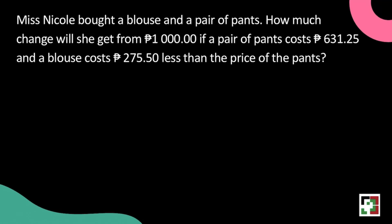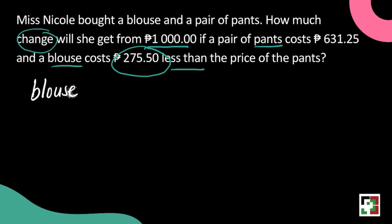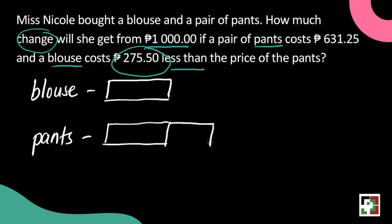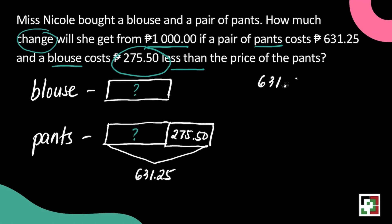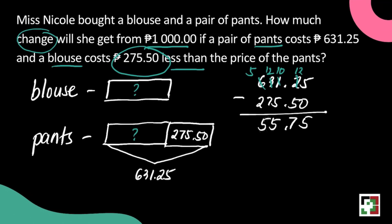We have the next problem. Ms. Nicole bought a blouse and a pair of pants. How much change will she get from 1,000 pesos if a pair of pants costs 631 pesos and 25 centavos and a blouse costs 275 pesos and 50 centavos less than the price of the pants? We're looking for the change after buying the pants and the blouse. The blouse is 275 pesos and 50 centavos lesser than the pants. To get the value of the empty boxes, subtract 631 pesos and 25 centavos and 275 pesos and 50 centavos — we get 355 pesos and 75 centavos, which is also the value of the box for the blouse.